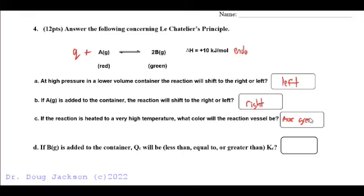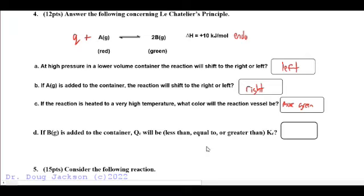If B is added to the container, Q will be less than, equal to, or greater than K. The measurement of K and Q both depend on the concentration of product over the concentration of reactant. If we add B, the product gets too big. That means the Q value—the reaction quotient—would be greater than K because K is product over reactant.